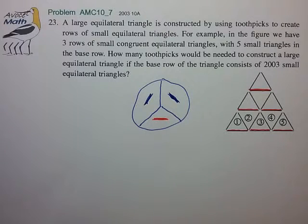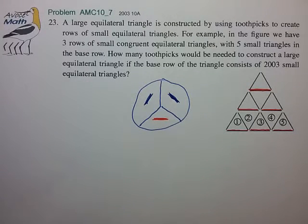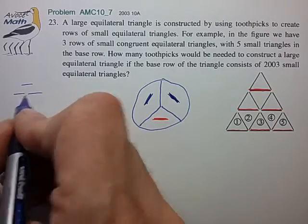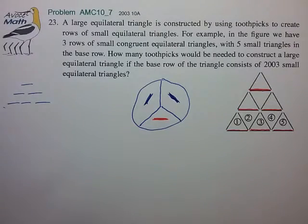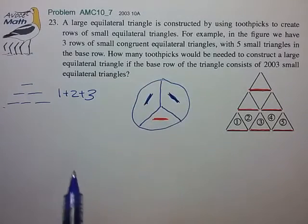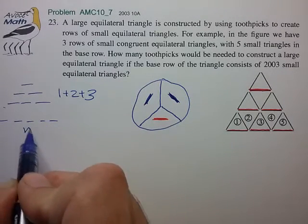So if we just concentrate on the horizontal toothpicks for the moment we realize that at least for this example figure we have what looks like a set of toothpicks that look like a small triangle number which consists of 1 plus 2 plus 3 and it's pretty easy to imagine that if we had a base triangle of n